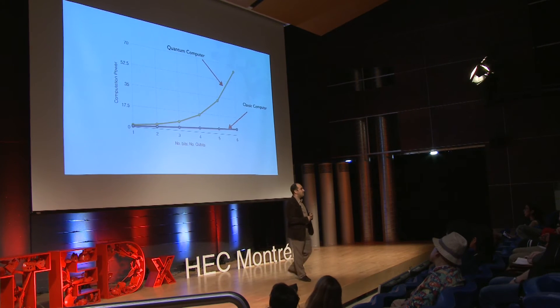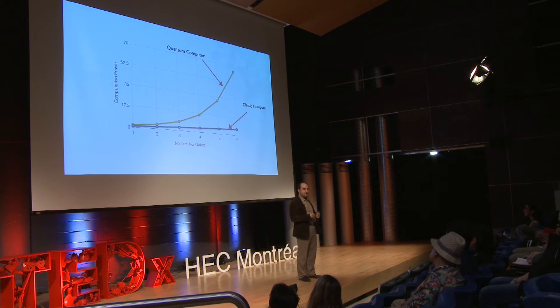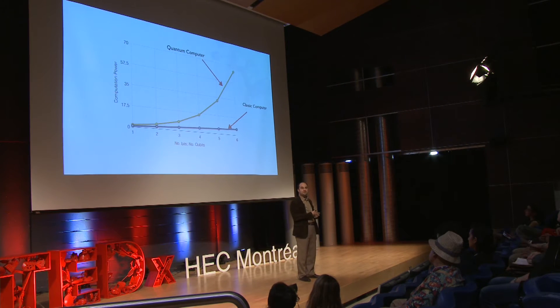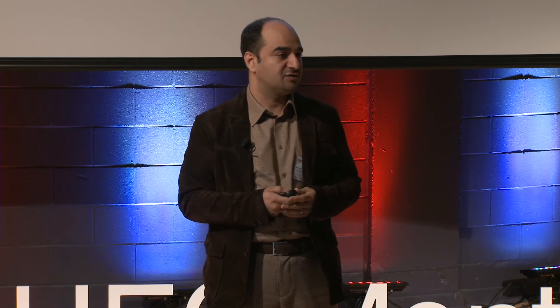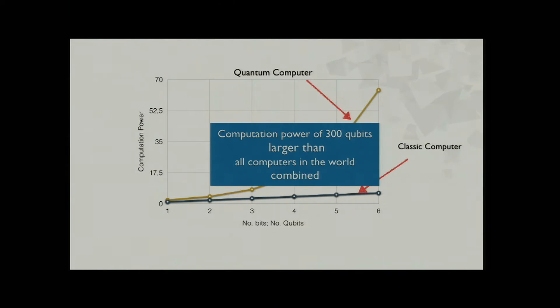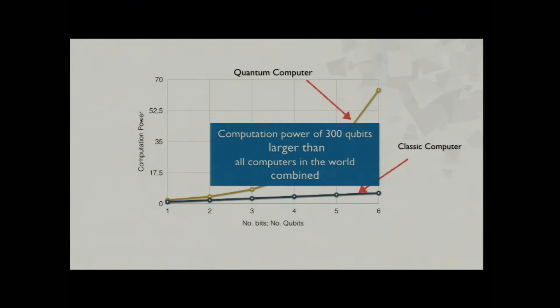This graph shows a comparison between the power of a classical computer and a quantum computer when you increase the number of bits. As you can see, the quantum computer's power grows way, way faster. As a matter of fact, with a quantum computer having only 300 qubits, you get more computation power than all computers on Earth combined.